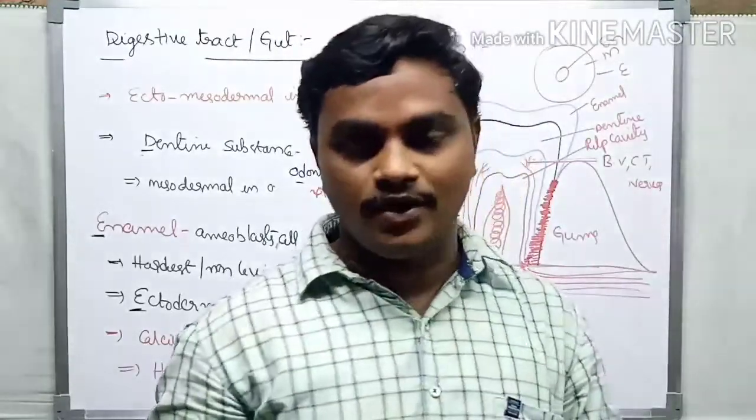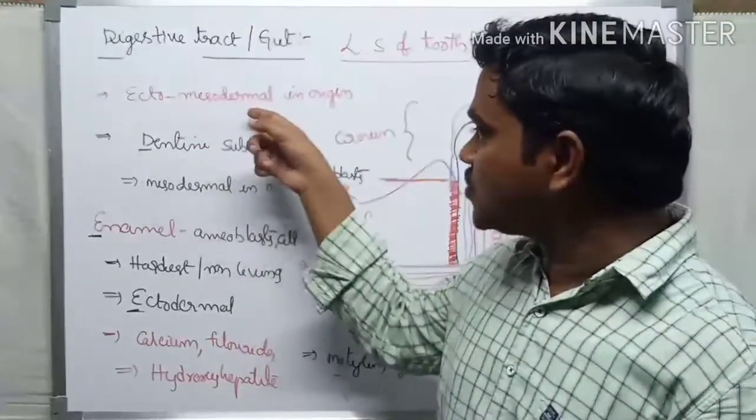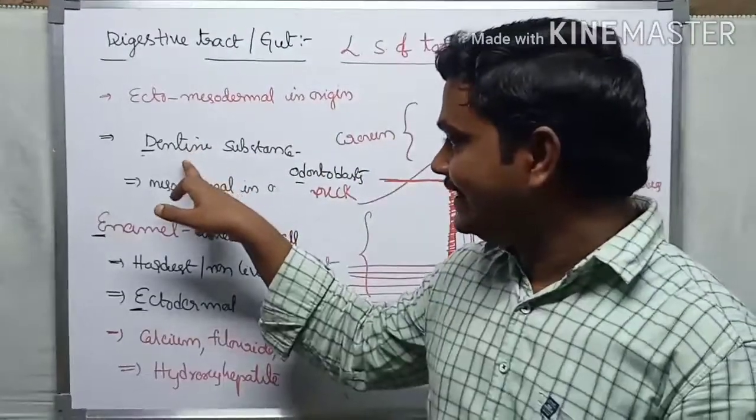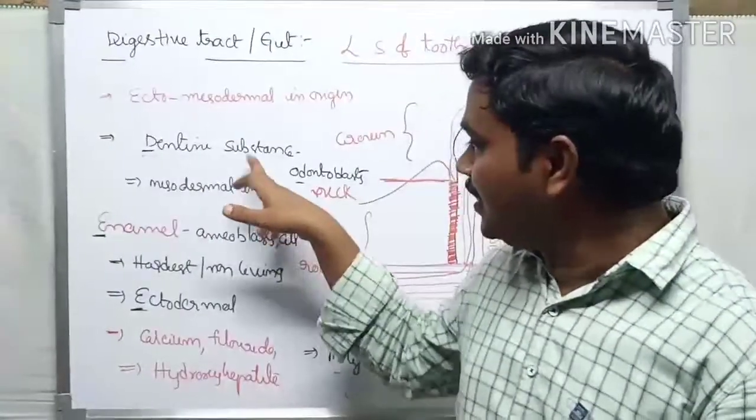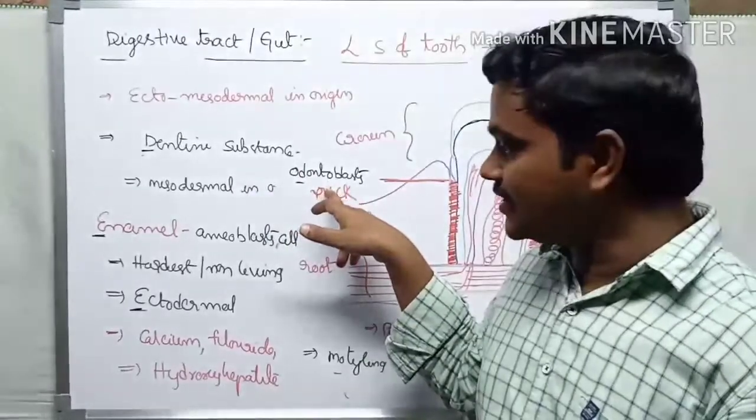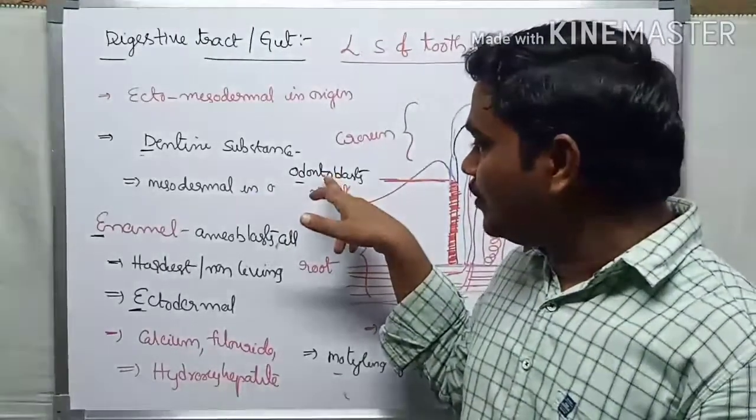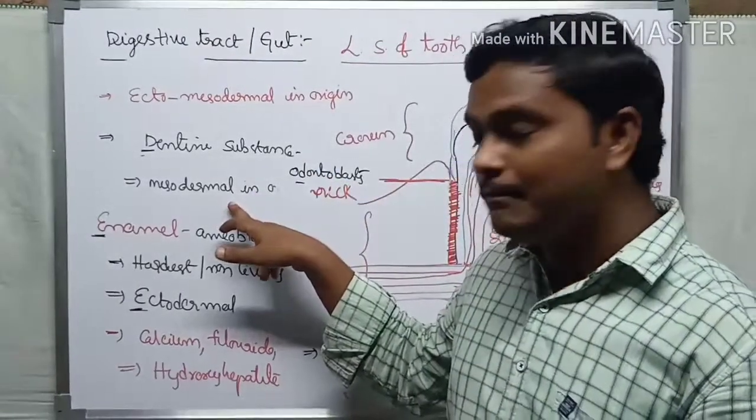Dentin is the substance which forms tooth. It is secreted by the odontoblast region, odontoblast cells, derived from the mesodermal region.